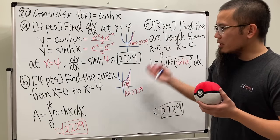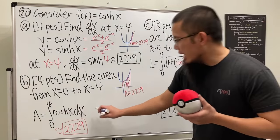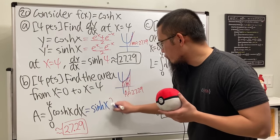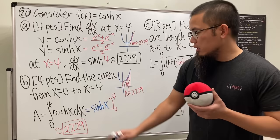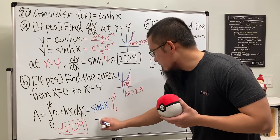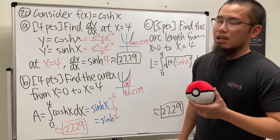The reason that this and that are the same is because if you integrate cosh(x), you get sinh(x), and then you just have to go from 0 to 4. Plug in 4 and plug in 0, and sinh(0) is 0, so this is really just the same as sinh(4), which is exactly what we have over there.